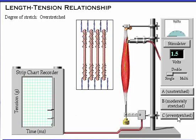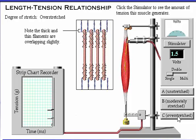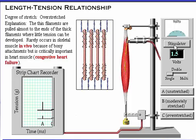At position C, the muscle is overstretched. Note in the diagram that the thick and thin filaments are overlapping only slightly. In muscles that are overstretched, the thin filaments are pulled almost to the ends of the thick filaments where little tension can be developed. This situation rarely occurs in skeletal muscles in vivo because of bony attachments, but is critically important in heart muscle. Congestive heart failure occurs when heart muscle is overstretched, resulting in weak contractions.